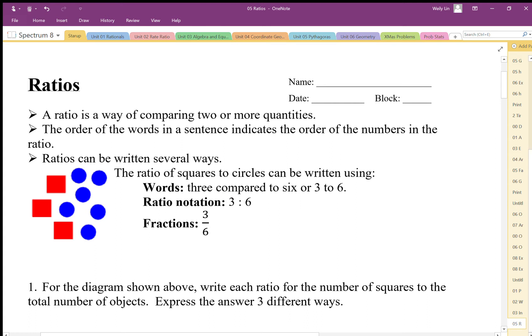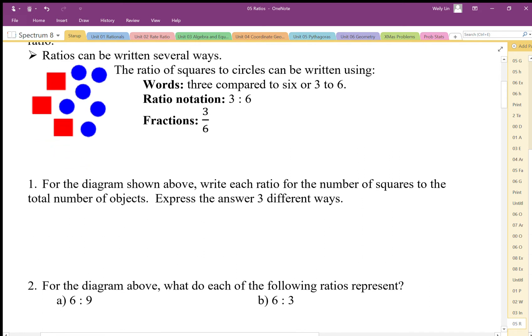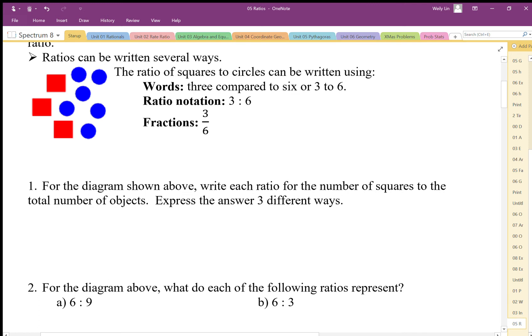When we write and state our ratios we ought to make sure that the order of the ratio is clear. When we take a look at the diagram above, we've got three squares and six circles, and we want to write the ratio of the squares to the total number of objects. It's important that we understand that this ratio is a part to whole ratio.